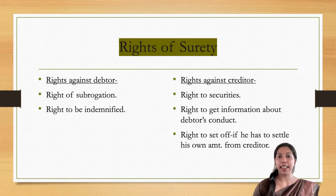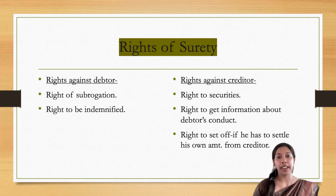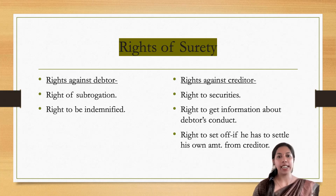Under rights against the creditor, the surety has the right to securities, the right to get information about the debtor's conduct, and the right to set off any amount owed by the creditor. These are the rights available to the surety under two heads: against the debtor and against the creditor.